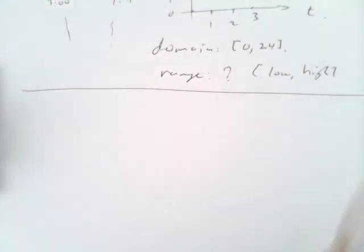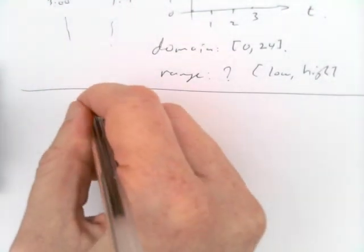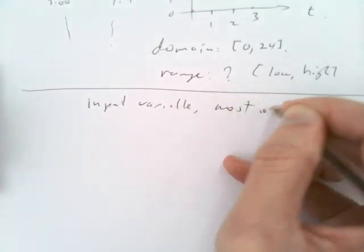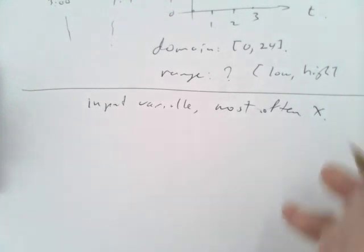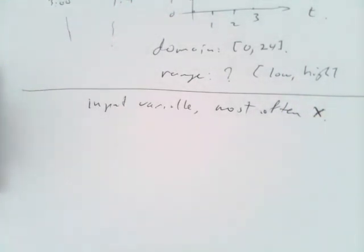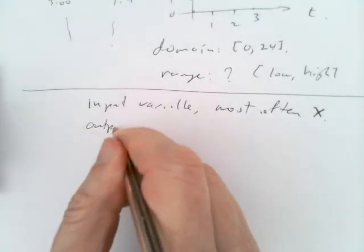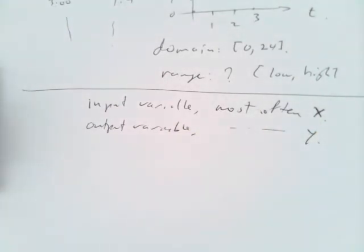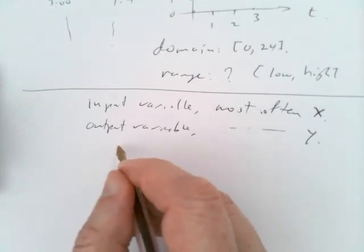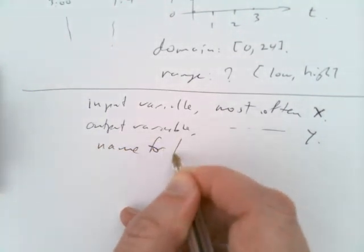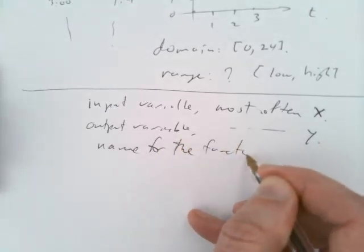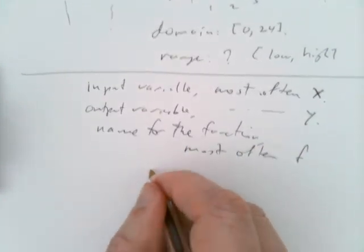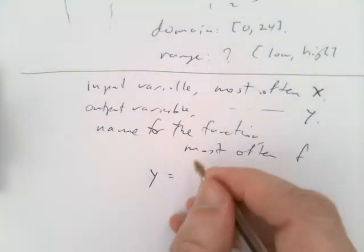For notation, we'll always be having some kind of input variable. Most often, it's called x. But you should be comfortable using any letter, Greek or Latin, or maybe even other letters, for input variables. And the output variable, again, is most often called y. But again, you should be comfortable with using any letter. And then we have to give the function a name. Most often, we'll call it f. And so we'll write that we have such a function as y is f of x. This is of. These round brackets are of.